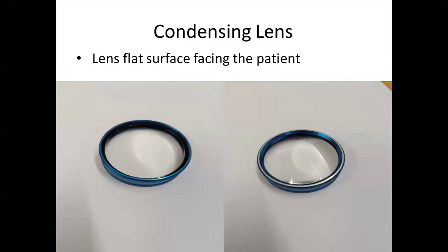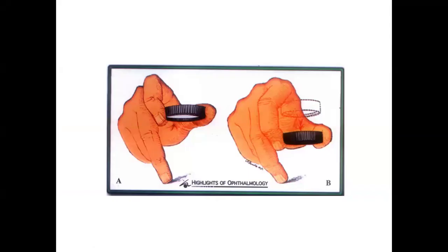Now comes the condensing lens. We really use a 20 diopter one. Some institutes use 30. In between there is a 2.2 condensing lens. One thing to remember is the lens flatter surface will always face the patient, and the steeper surface will face towards the observer. We use our middle finger over our cheek to fix the lens, and we can pull up and down to focus for good focusing of the fundus.